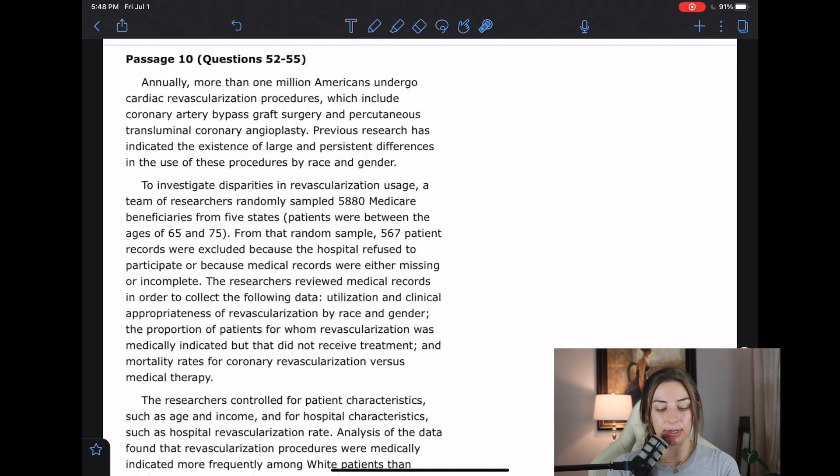Annually more than 1 million Americans undergo cardiac revascularization procedures which include coronary artery bypass graft surgery and percutaneous transluminal coronary angioplasty. Previous research has indicated the existence of large and persistent differences in the use of these procedures by race and gender.